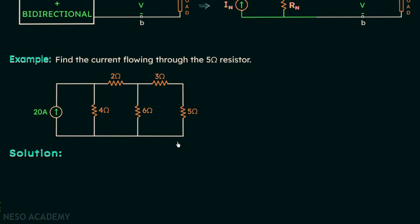This is the introduction. Now we move on to an example problem. According to the question, we are required to find the current flowing through the 5-ohm resistor. To do this using Norton's theorem, we will first calculate In, then calculate Rn, and finally form the Norton's equivalent circuit. To calculate In, we short-circuit the load and assign the Norton current In in the network.